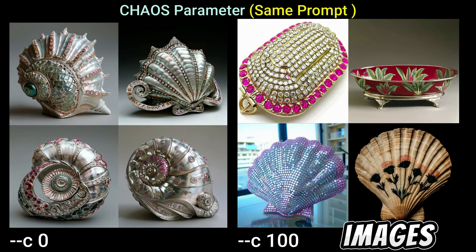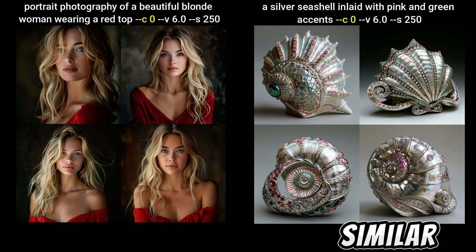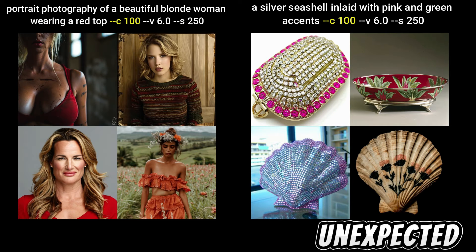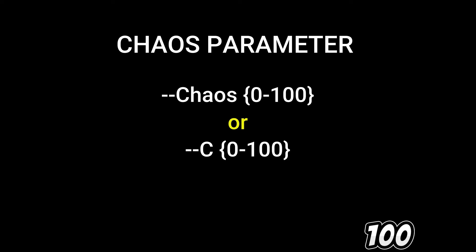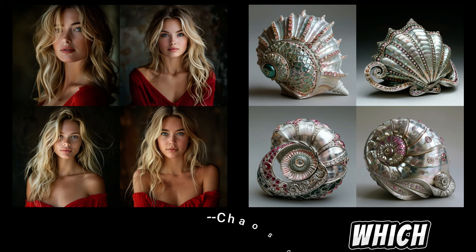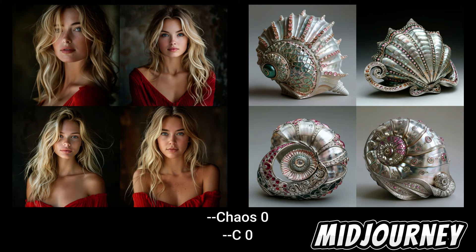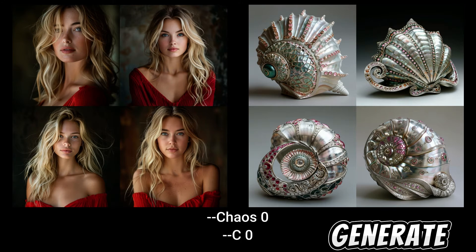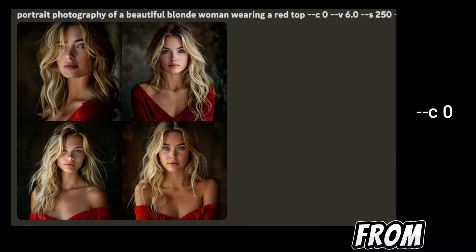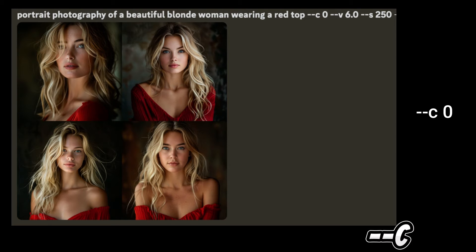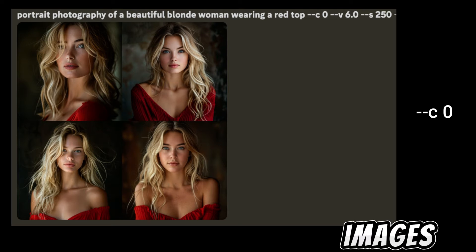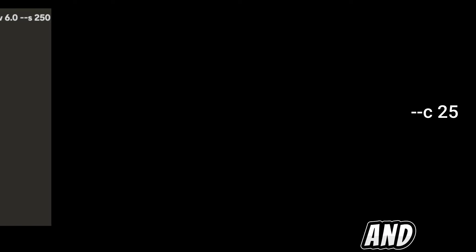The chaos parameter plays a big role in how diverse the grid images will be. The lower the chaos value, the more similar and expected the grid images will be. The higher the chaos value, the more different and unexpected the results. The chaos parameter ranges between 0 and 100, with 0 being the default. These images were generated from the prompt: portrait photography of a beautiful blonde woman wearing a red top, with `--c 0`.